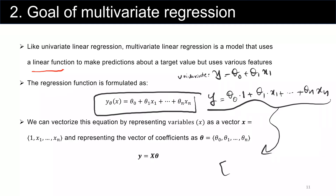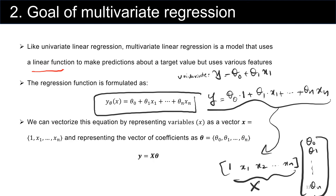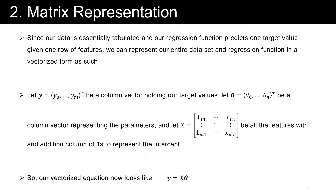How can we represent this in the vector format? We can say the vector [1, x sub one, x sub two, ..., x sub n] multiplied by the vector [theta sub zero, theta sub one, ..., theta sub n]. We call this vector x and this vector theta. This is the vector representation for multivariate regression.